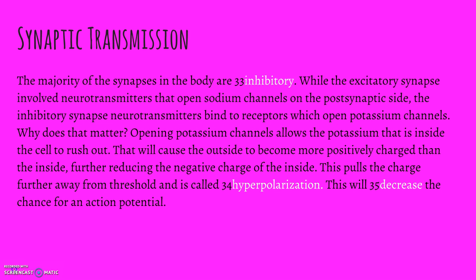The majority of the synapses in the body are inhibitory. While the excitatory synapse involves neurotransmitters that open sodium channels on the post-synaptic side, the inhibitory synapse neurotransmitters bind to receptors that open potassium channels. Opening potassium channels allows potassium from the inside to rush out, causing the outside to become more positively charged than the inside, which further reduces the negative charge inside. This pulls the charge further away from threshold and is called hyperpolarization. Hyperpolarization decreases the chance for an action potential—that's why it's inhibitory.